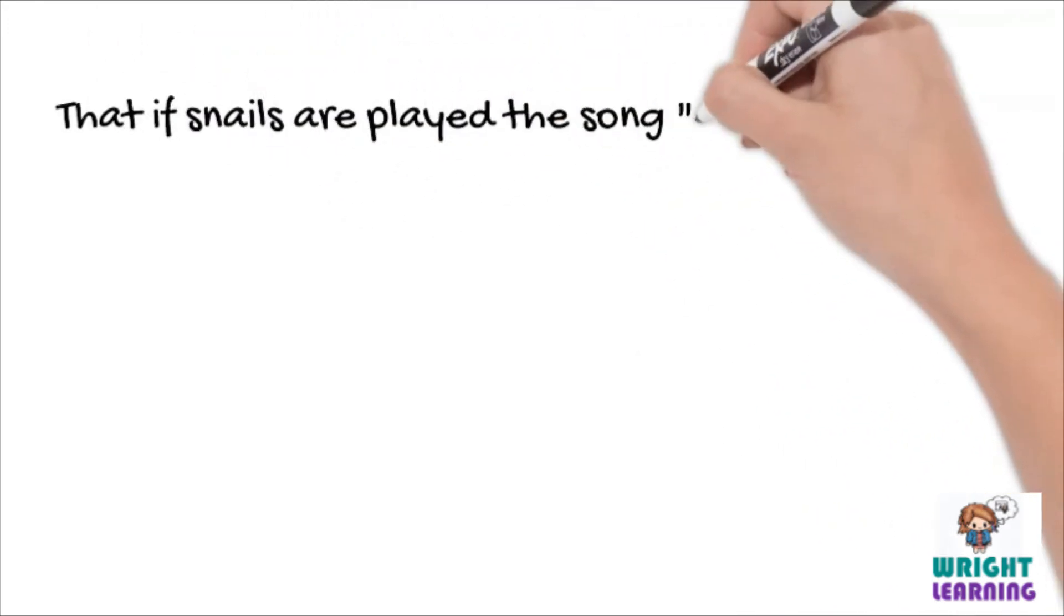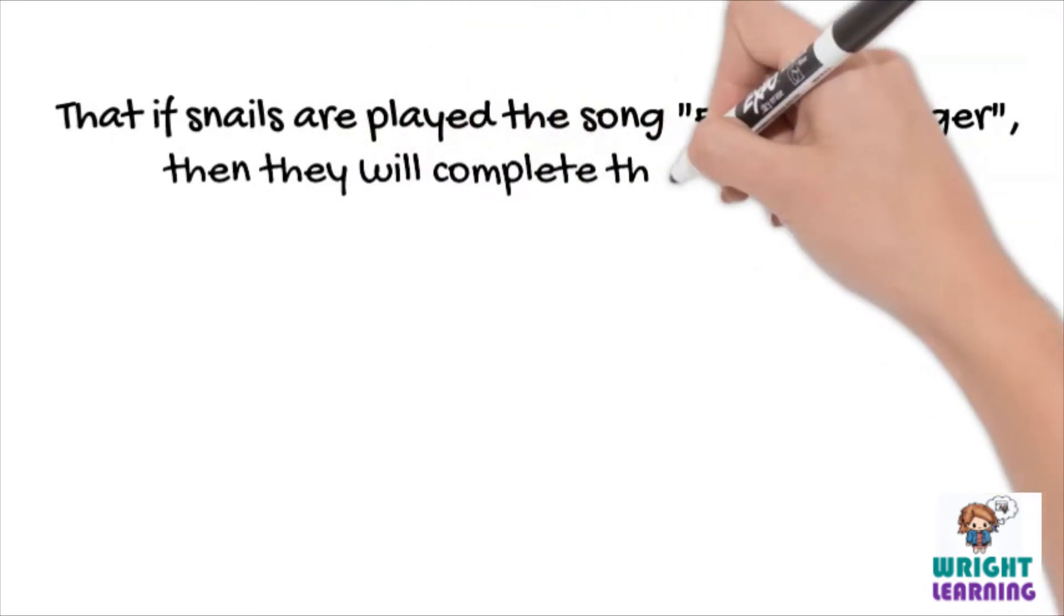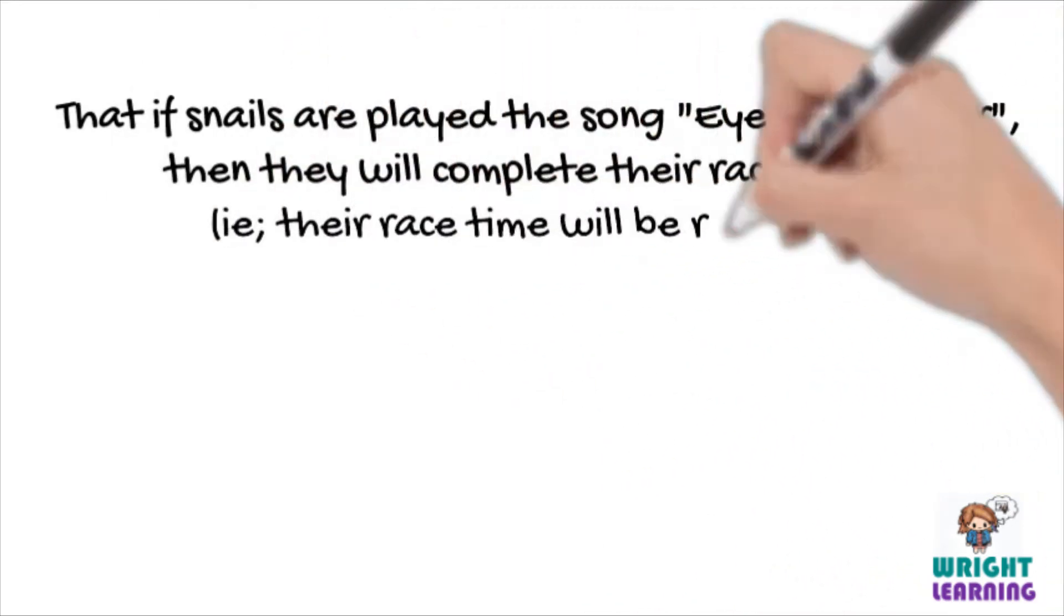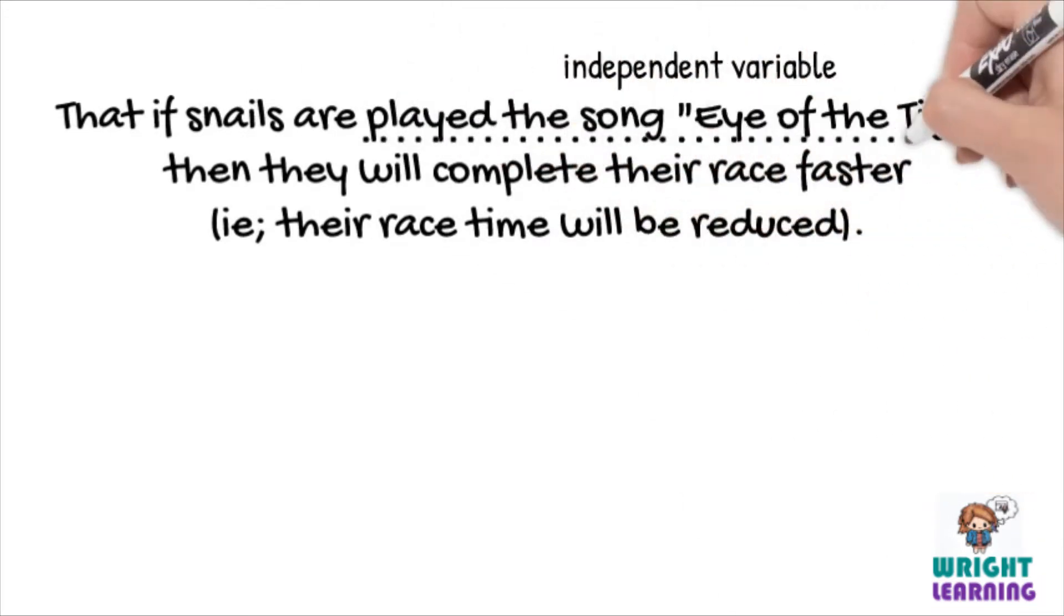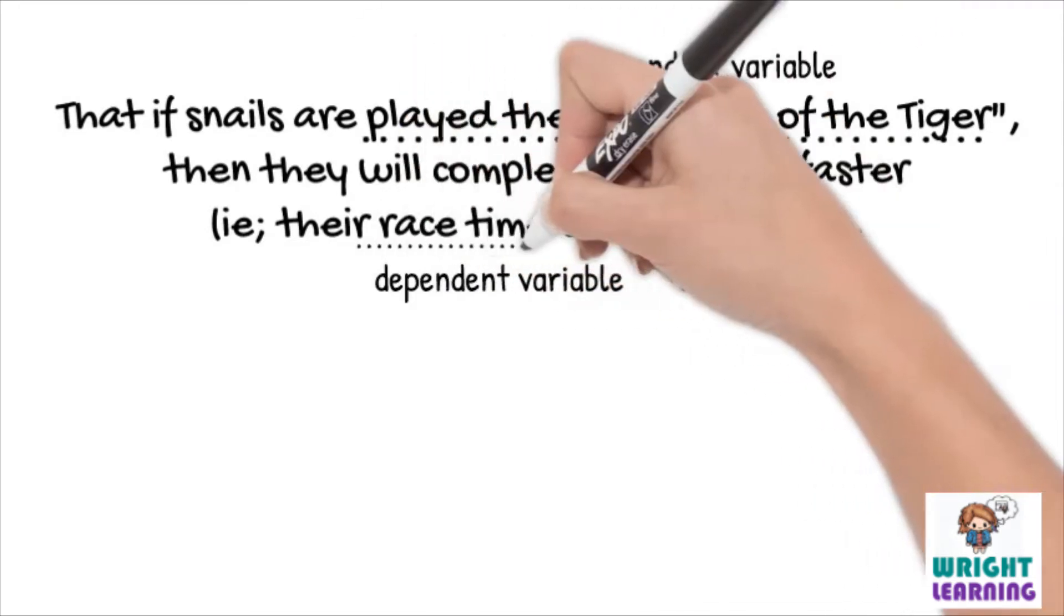Trust me, you'll know it when you hear it. The hypothesis you come up with together is that if snails are played the song Eye of the Tiger, then they'll complete their race faster, or in other words, their race time will be reduced, with the independent variable being whether or not they played the song, and the dependent variable being their race time.